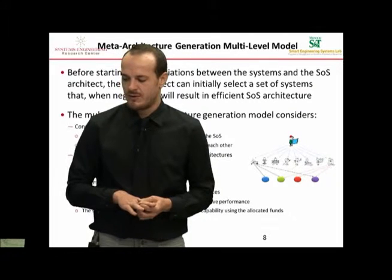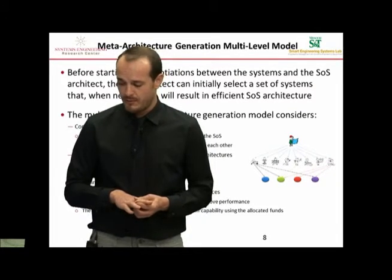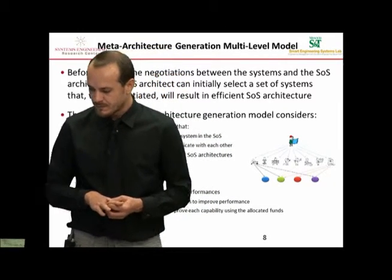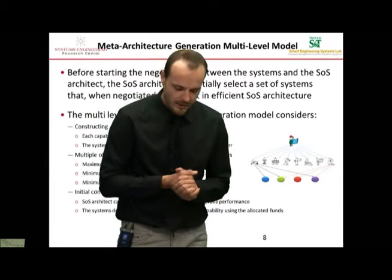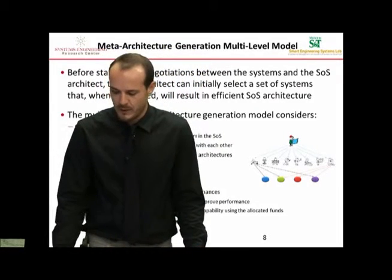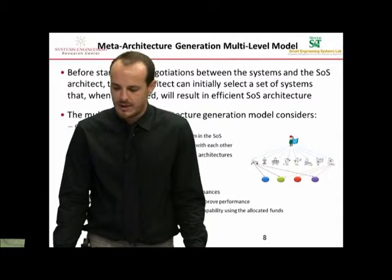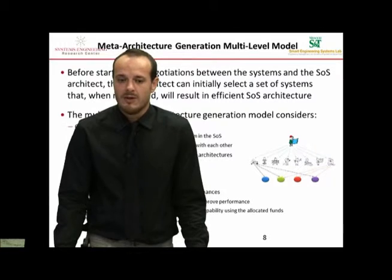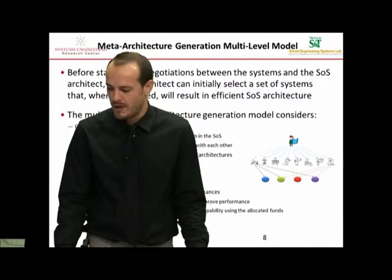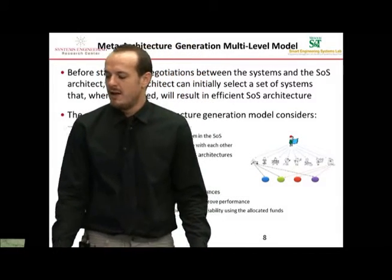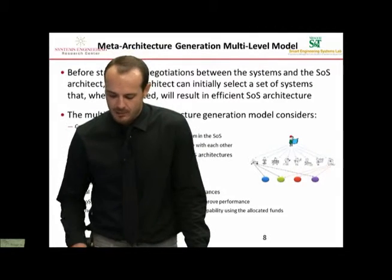Specifically, we consider maximization of total performance, minimization of total cost, and minimization of the deadline of the SOS. The most important part is that we consider initial contracts with systems to improve performances — the SOS architect can allocate funds, investing in systems so that systems can improve the performances of the capabilities they can provide. The systems then decide on how to use the funds allocated to improve the capabilities they can provide.